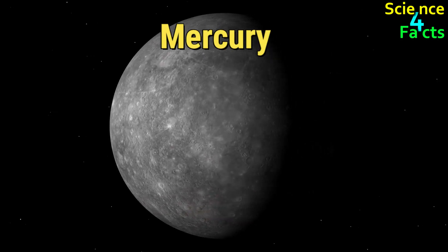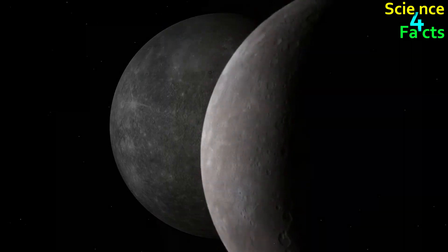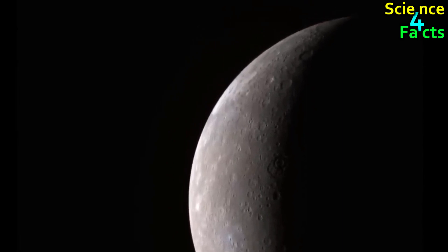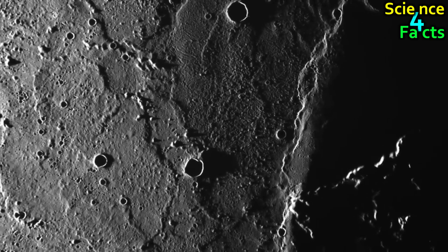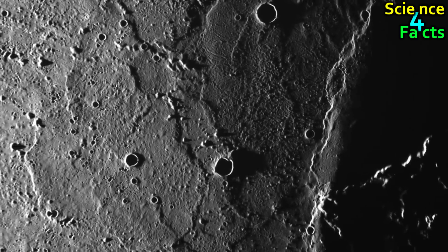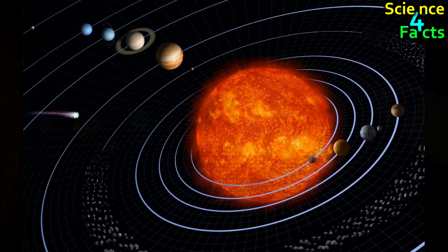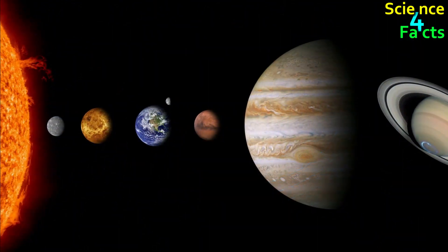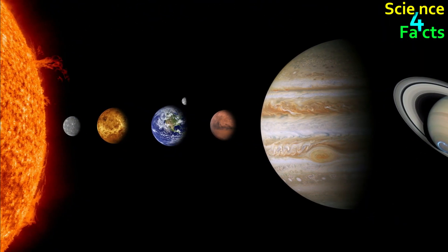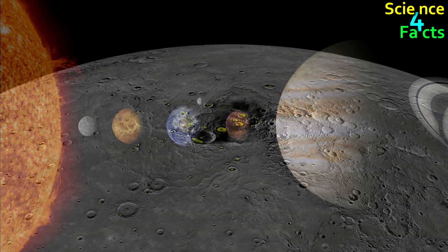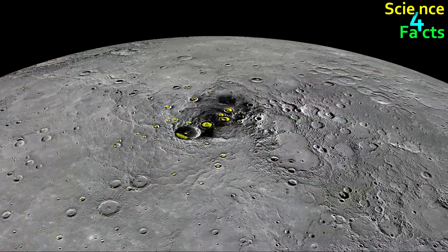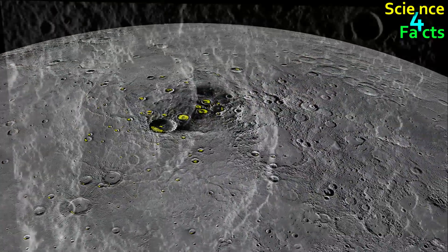Mercury is a small and rocky planet, with a diameter of just 4,880 kilometers or 3,032 miles, making it slightly larger than Earth's moon. It is the closest planet to the sun, and as a result, it has a very harsh environment, with surface temperatures that can range from minus 173 degrees Celsius at night to 427 degrees Celsius during the day.